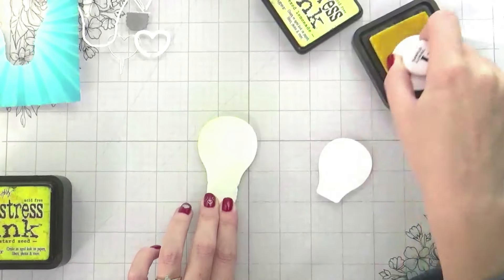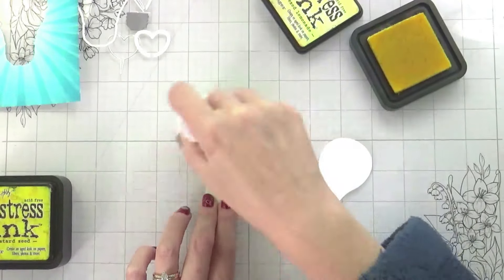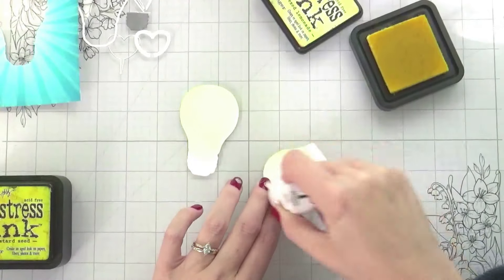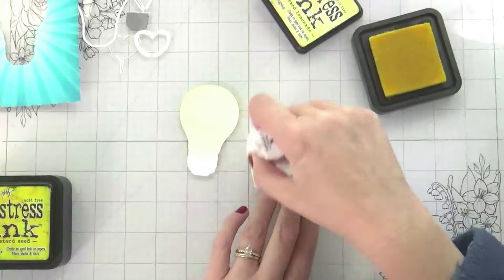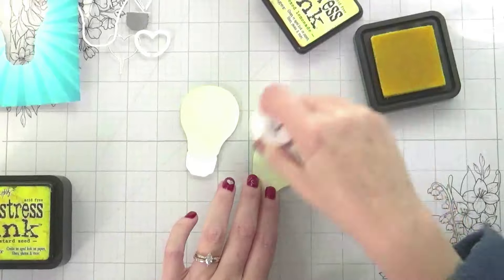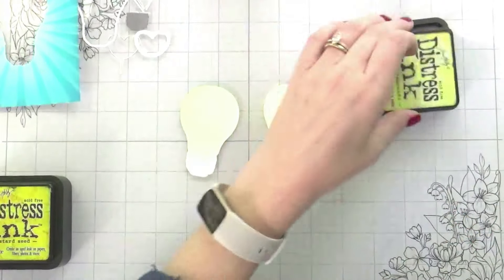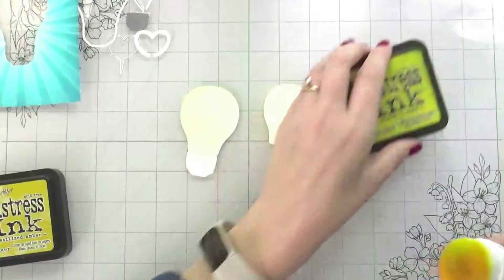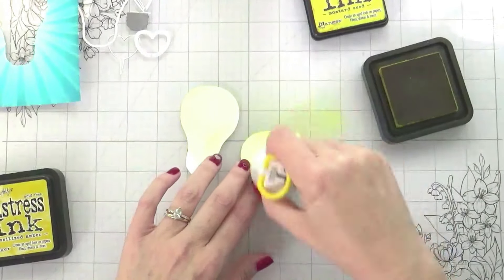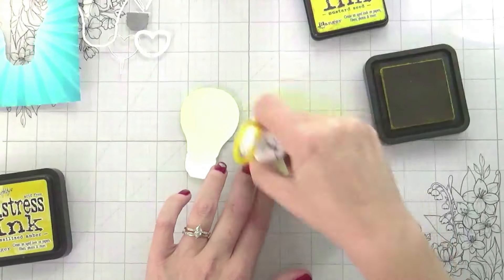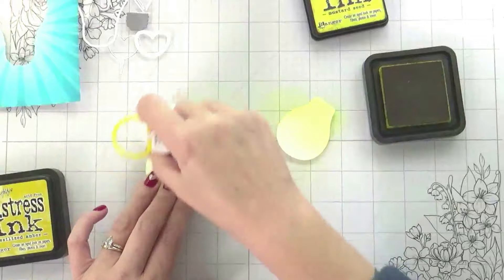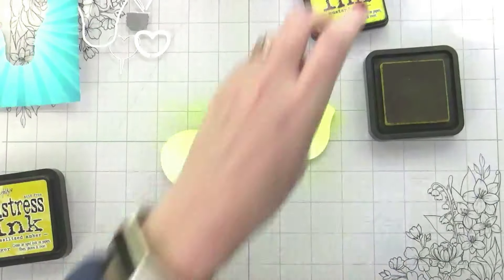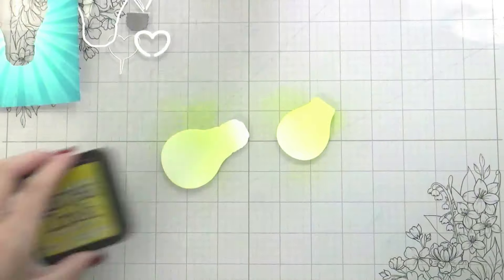With the light bulb, I did choose to do some ink blending because I didn't want it to be solid yellow. I kind of wanted it to be a bit lighter and fade off. So I started with Squeezed Lemonade and then I added shading more towards the bottom with Mustard Seed and then finally Fossilized Amber.